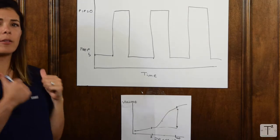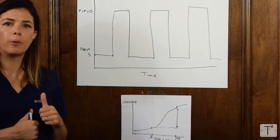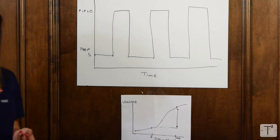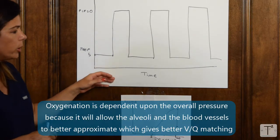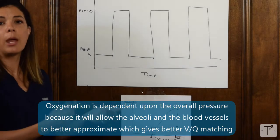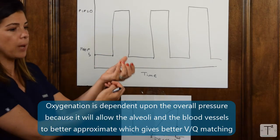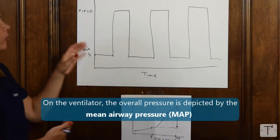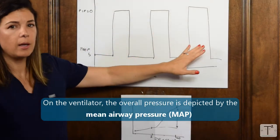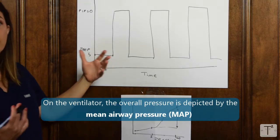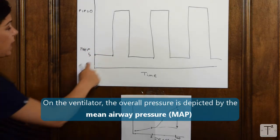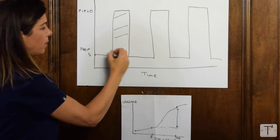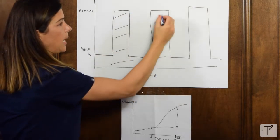Now let's go back to the first lecture where I talked about oxygenation and ventilation. Remember when I said that oxygenation is dependent on the overall pressure because it will allow the alveoli and the blood vessels to approximate and therefore have better VQ matching. On the ventilator, the overall pressure is depicted by the mean airway pressure, which is the area under the curve. All of this will determine the mean airway pressure.